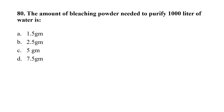Question number 80. The amount of bleaching powder needed to purify 1000 liters of water is: Option A, 1.5 grams; Option B, 2.5 grams; Option C, 5 grams; Option D, 7.5 grams. The correct option is B — 2.5 grams of bleaching powder is required to purify 1000 liters of water.